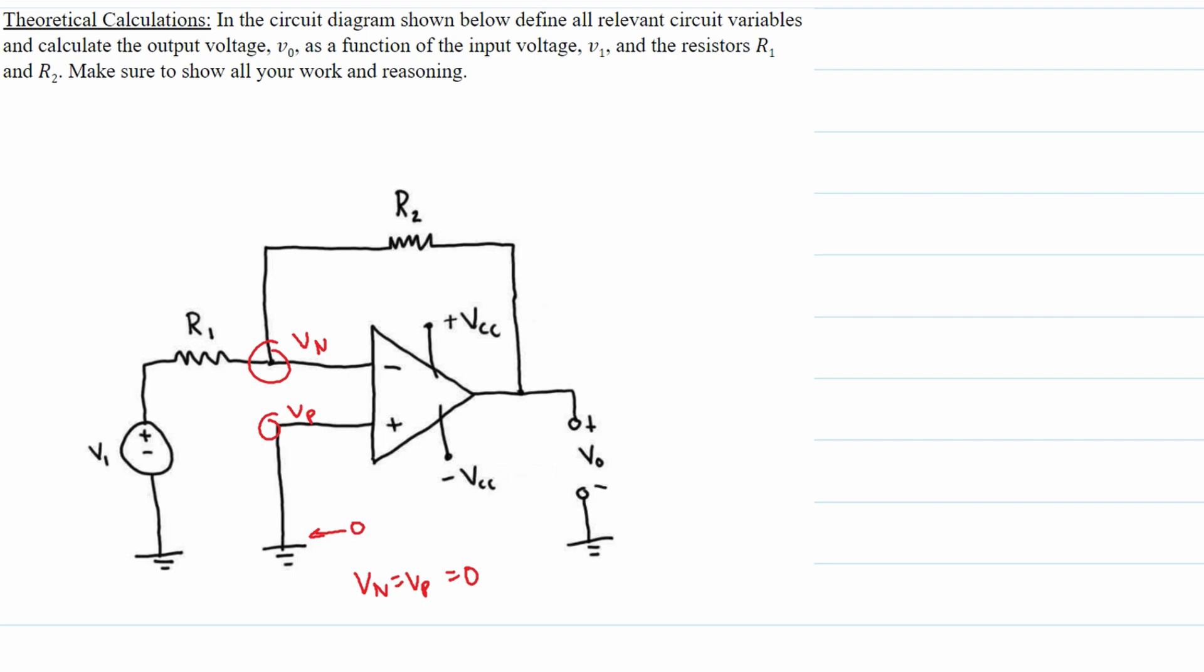Knowing this, we can write our equation. We know that we have Vn minus the source voltage V1, all divided by R1 because it's the voltages over R1. Next, we're going to have a plus, and then Vn minus our output voltage, all over R2. We're going to set this equal to 0, and this is Kirchhoff's current law.